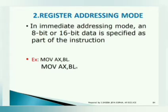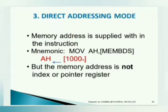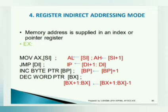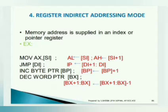By accessing the register we are able to access the data. The third one is the direct addressing mode — the data address will be directly given in the instruction, so that by referring to that address we can access our data. The fourth one is the register indirect addressing mode — the register itself is mentioned in the instruction, and the register will contain the address of the data.